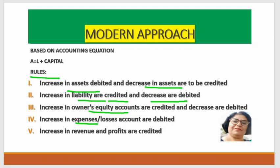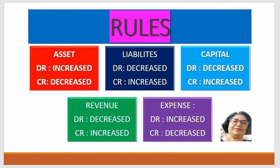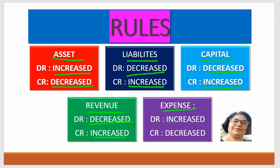If the revenue is increased, then we credit it, and if the revenue is reduced, then we debit it. To summarize the rules: Asset — debit when increased, credit when decreased. Liability — debit when decreased, credit when increased. Capital — debit when decreased, credit when increased. Revenue — debit when decreased, credit when increased. Expense — debit when increased, credit when decreased.